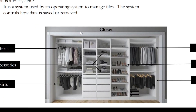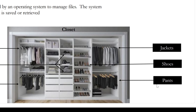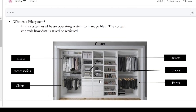In the image, this is our showcase. We will talk about sheets, accessories, skirts, jacket, shoes, pants — these are different things. For particular things, we will arrange them in a rack. Because if we go to the shirt section, we can find the shirt section. In this section, we will store data very easily. So that is the purpose of this file system.